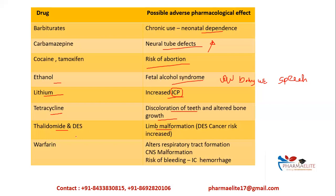Diethylstilbestrol causes an increased risk of cancer. Warfarin affects respiratory tract formation and function during pregnancy. Its effects vary by trimester: in the first trimester it affects respiratory functions; in the second trimester it causes CNS malformation; and in the third trimester there is an increased risk of bleeding or hemorrhage due to warfarin use.